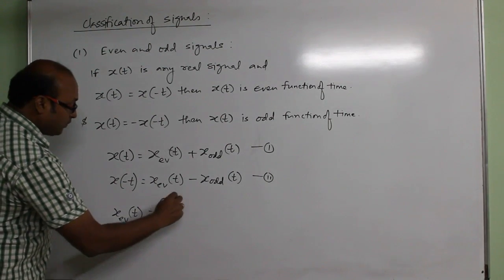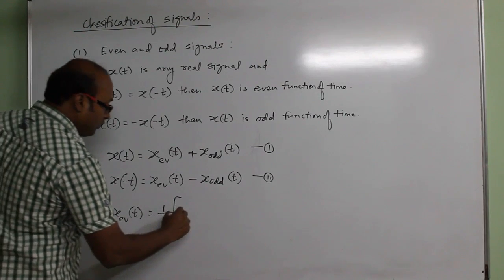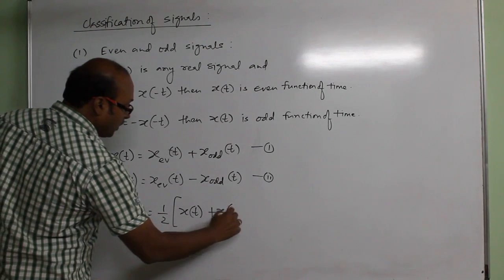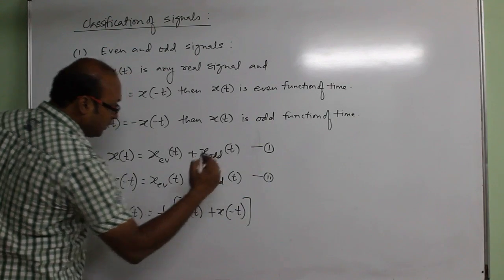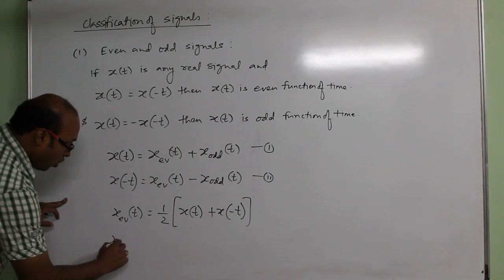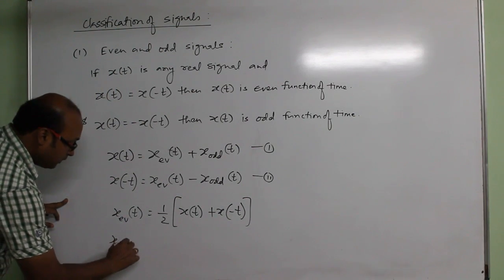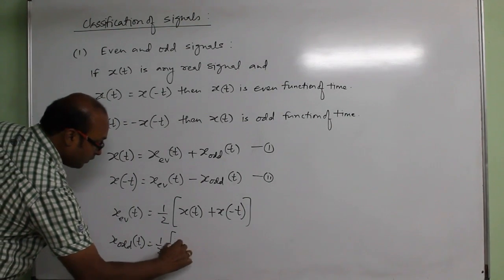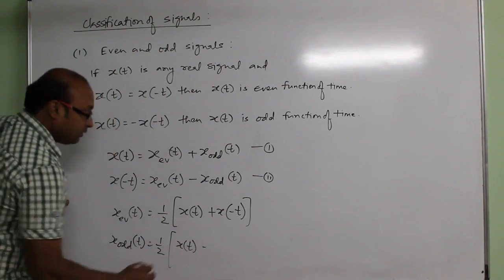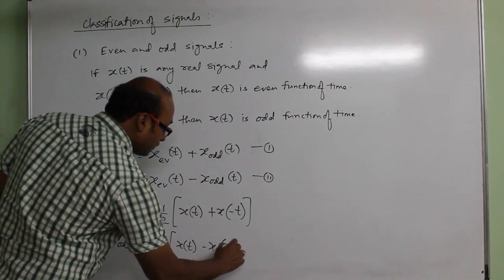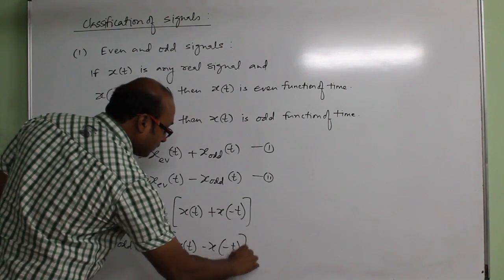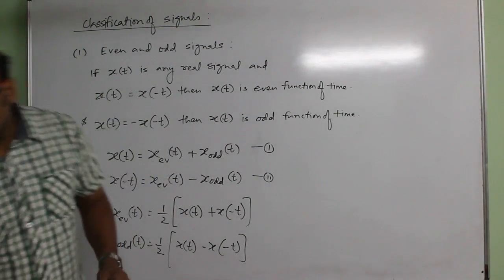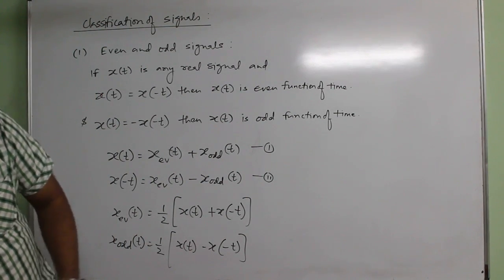The even part of x(t) will be half of x(t) plus x(-t). Similarly, the odd part of x(t) is half of x(t) minus x(-t). Now let us see some examples of even and odd signals.